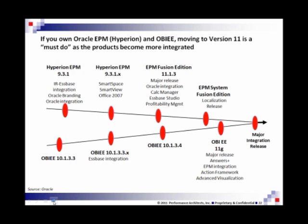Since the acquisition of Siebel in 2005 and Hyperion in 2007, Oracle has been making significant changes to both tool sets to improve the integration between both products. As both products converge over the next few years, the terms OBIEE and EPM will mostly be forgotten and replaced by the concept of Oracle Fusion Middleware entirely. The next major release of Oracle Fusion Middleware will see the complete and seamless integration of the component architecture of both products.